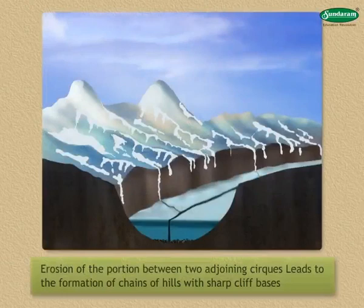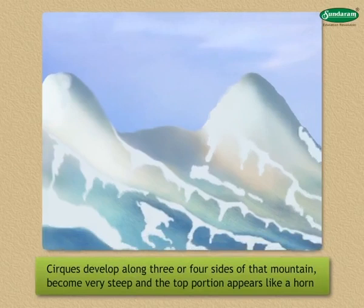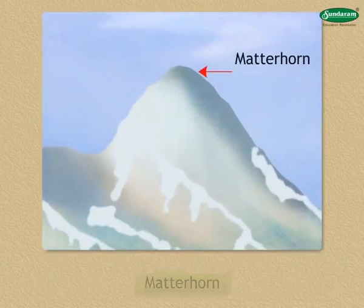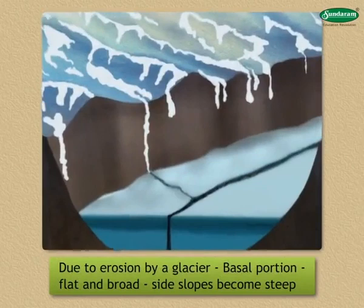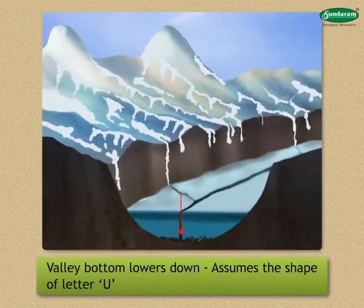Next is Arete and Matterhorn. Intensive erosion of the portion between two adjoining cirques leads to the formation of chains of hills with sharp cliff faces. Such a chain is called Arete. If cirques develop along three or four sides of a mountain, the slopes become very steep and the top portion appears like a horn — it is called a Matterhorn. Next, the U-shaped valley: due to erosion by a glacier, the basal portion of the valley becomes flat and broad while the side slopes become steep. As the valley bottom lowers down, it assumes the shape of the letter U. Hence, these valleys are called U-shaped valleys.